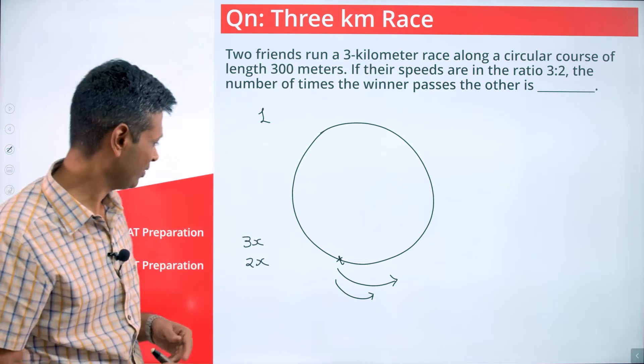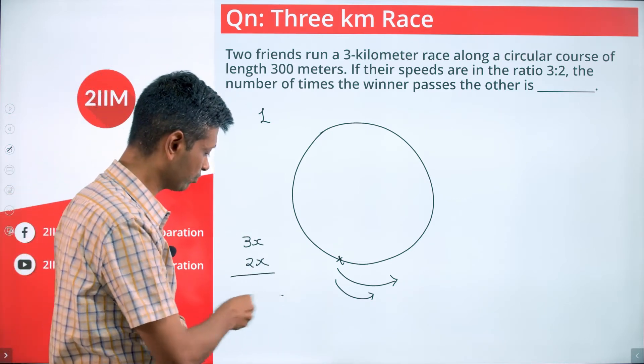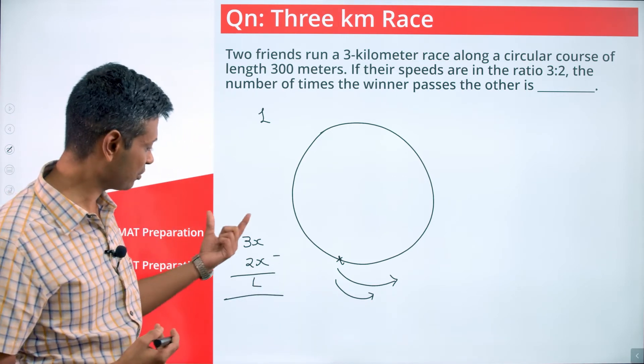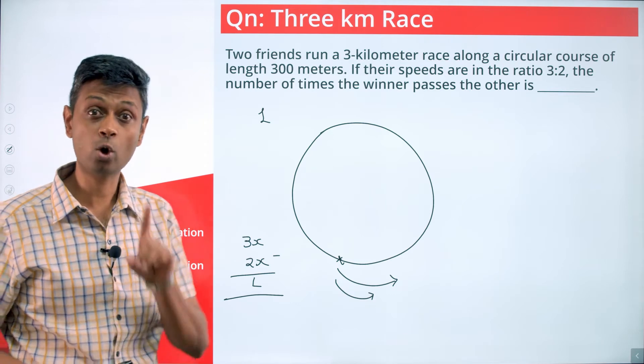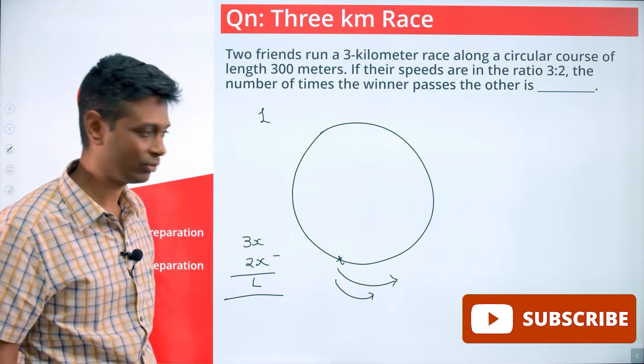Whenever he travels 3x, this guy travels 2x. The difference between them should be an entire lap. Only then this will happen. 3x minus 2x should be one whole lap. When will that happen? 3x minus 2x is x.